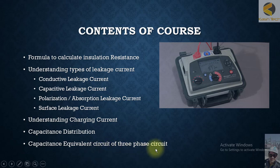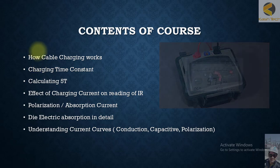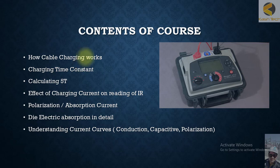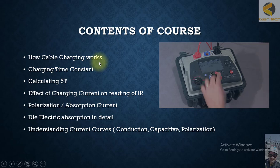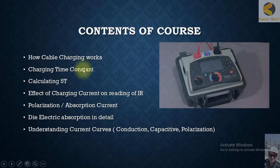Each cable has some capacitance, so we will see the capacitance equivalent circuit of a three-phase circuit and how cable charging works. We will discuss how the phenomenon of cable charging affects the Megger reading and how to eliminate this error. Since a cable is essentially an RC circuit where T = RC, we will calculate the time constant and 5T — cable charging is nearly 100% complete at five times the time constant.